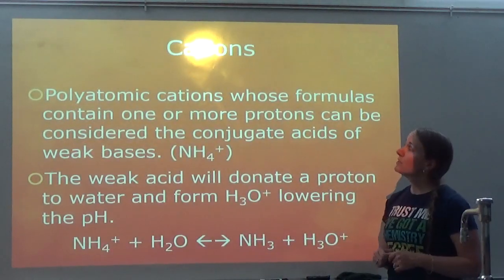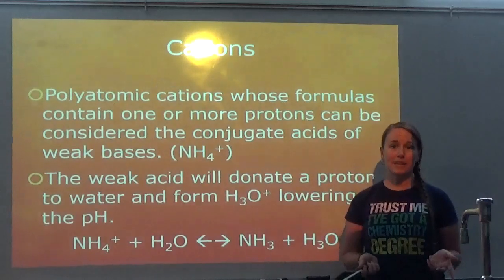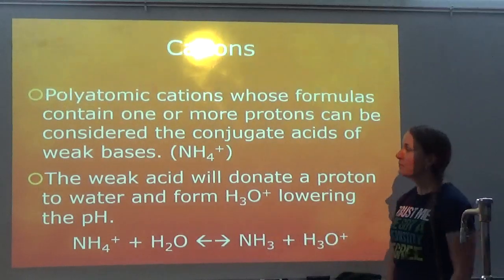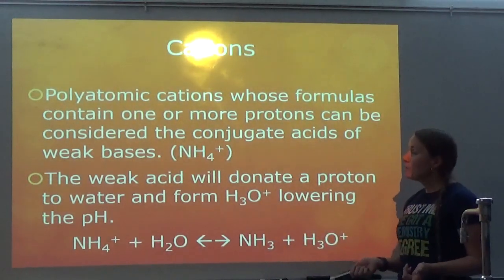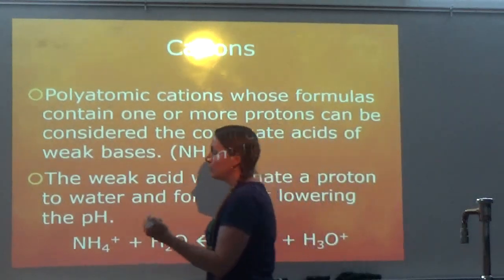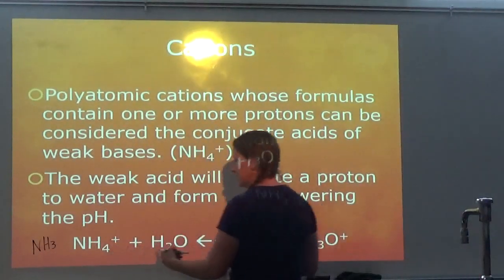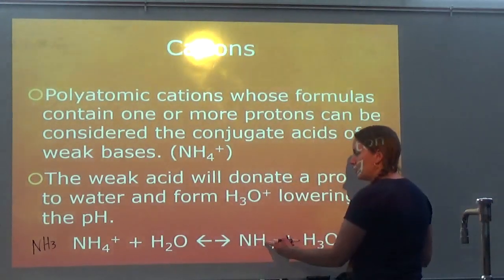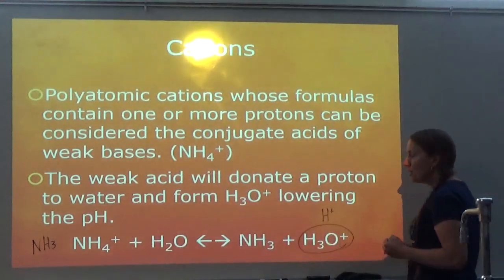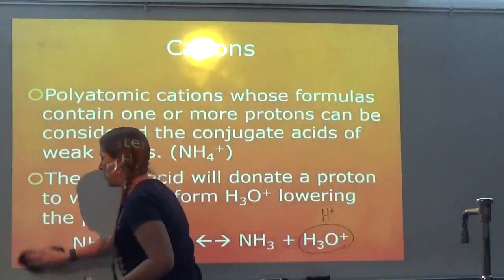Polyatomic cations whose formulas contain one or more protons can be considered the conjugate acids of weak bases. For example, NH₄⁺ is the conjugate acid of the weak base NH₃. The weak acid will donate a proton to water and form H₃O⁺, lowering the pH. So NH₄⁺ will lose a hydrogen to water, making H₃O⁺ or H⁺, which means it's going to be acidic because your pH is going to be less than 7.